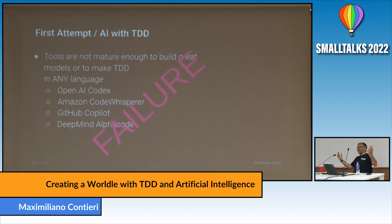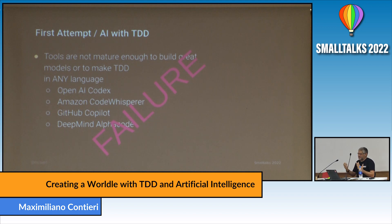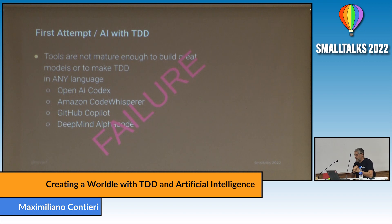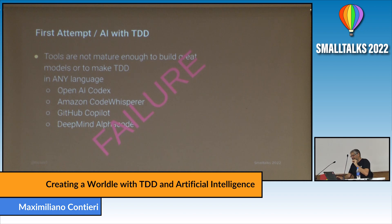I wanted to do TDD with artificial intelligence, and I tested four of the most used AI code generators. I couldn't find anyone who has done TDD with these code generators — with Codex, Code Whisperer from Amazon, GitHub Copilot, or DeepMind AlphaCode. They are not ready — at least not as of November 2022. I think they will be ready soon. It's very difficult to build good models with these tools. You can write code, but you cannot write models. That's why they are called assistants, not coders, and this is very important.